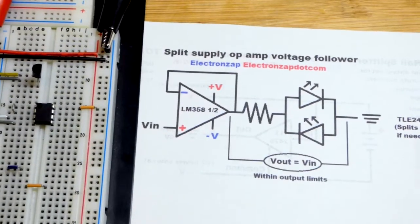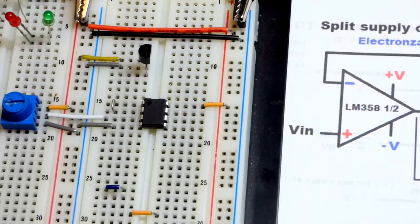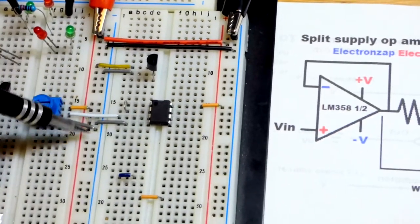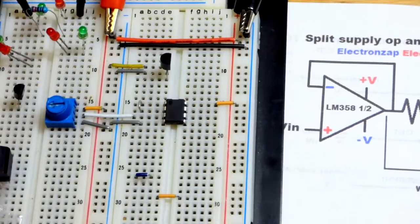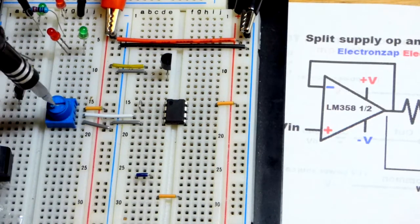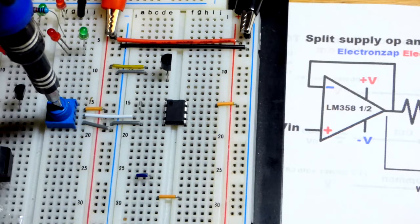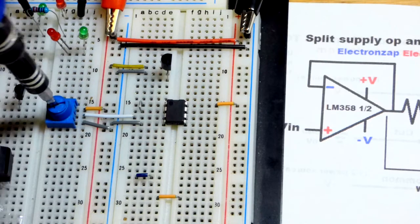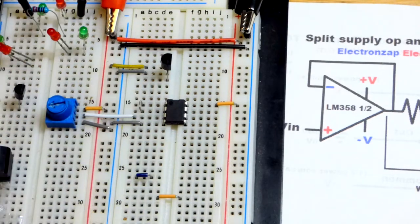I already have the op amp wired up. We have the trim pot to the left right there, one side to the negative rail, one side to the positive rail. The middle pin connected to the wiper. It's about halfway right now. It will go all the way to the negative rail there, all the way to the positive rail there, and the halfway point is our new ground, zero volts. That goes to the third pin down.